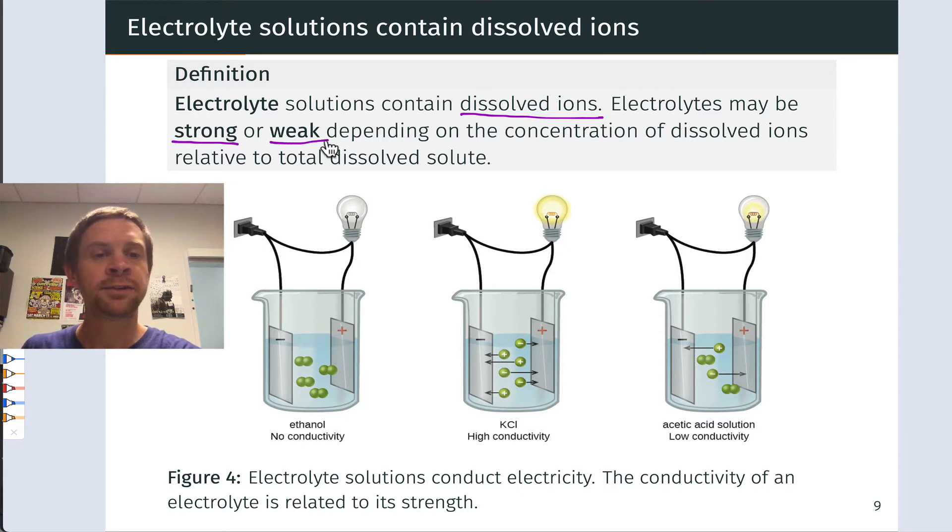The extent to which an electrolyte solution conducts electricity depends on whether it is strong or weak. Strong and weak depend on the concentration of dissolved ions relative to the total amount of solute dissolved. Some substances only dissociate to form ions to an incomplete degree, and this leads to a weak electrolyte situation where we've got a lot of dissolved solute in there, but not a lot of it is actually in ionic form. And so the solution conducts electricity only weakly.